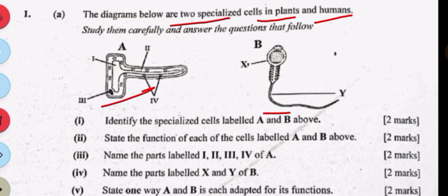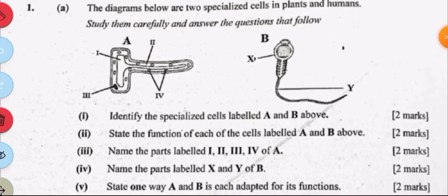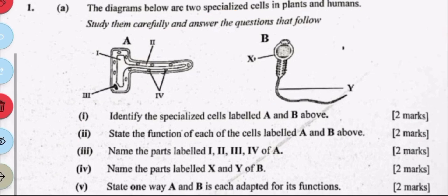The second question asks to state the function of each of the cells labeled A and B. The function of A is to absorb water and nutrients from the soil. The function of B is that it is adapted to fertilizing the female gamete, which is the egg.